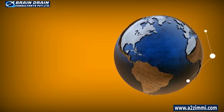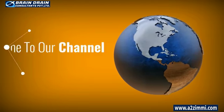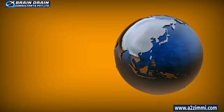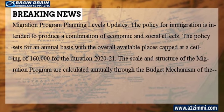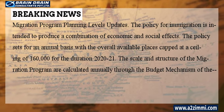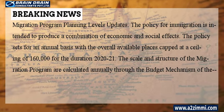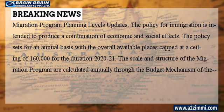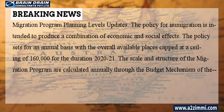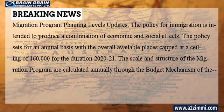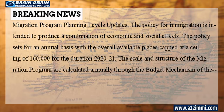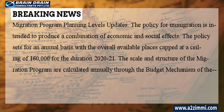Welcome to our channel, A2Z Immigration Updates. Here is the latest news on migration program planning levels. The policy for immigration is intended to produce a combination of economic and social effects, set on an annual basis with the overall available places capped at a ceiling of 160,000 for the duration of 2020 to 2021.